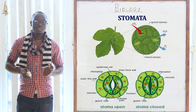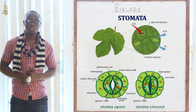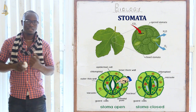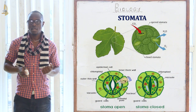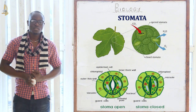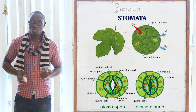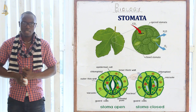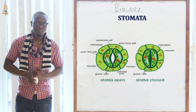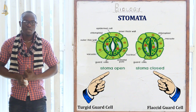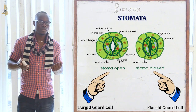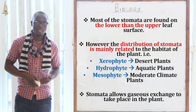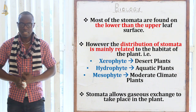Guard cells mainly exist in pairs and cannot function on their own. The inner walls of the guard cells are thick and less elastic than the outer walls. This causes the outer walls to stretch outwards to accommodate water molecules, making the guard cells turgid and causing the stomata to open. Most stomata are mainly found on the lower part of the leaf rather than the upper part.